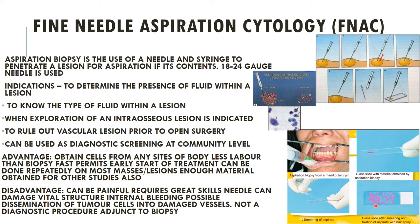Aspiration of blood may indicate a vascular malformation within the bone. Any intra-bony radiolucent lesion should be aspirated before surgical intervention to rule out a vascular region. If the lesion is determined to be vascular in nature, the flow rate should be determined because uncontrollable hemorrhage can occur if you incise that lesion.